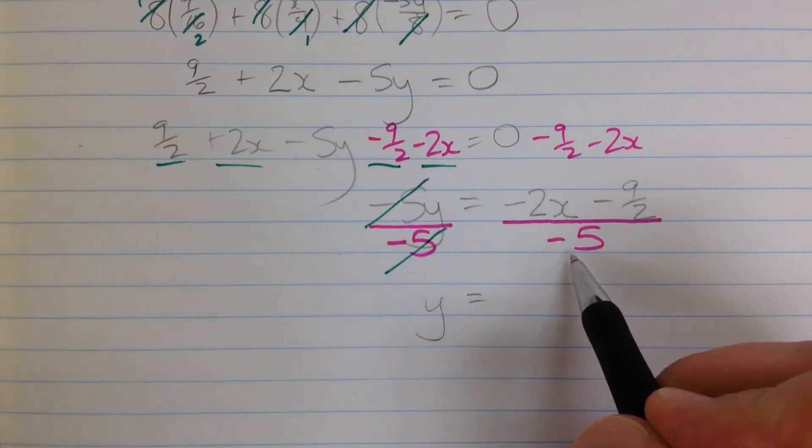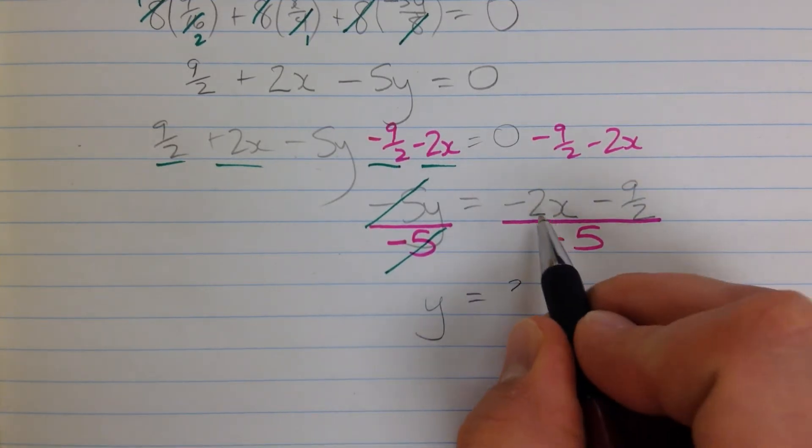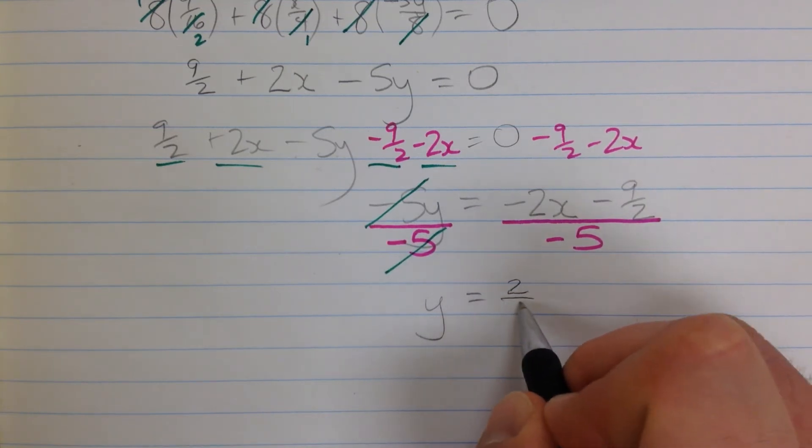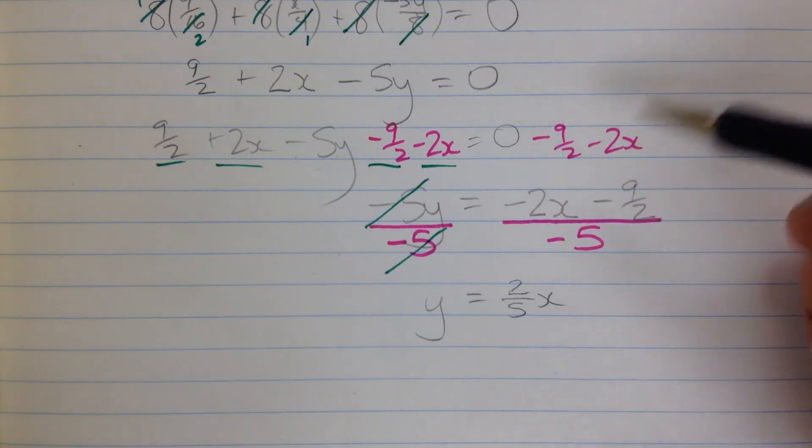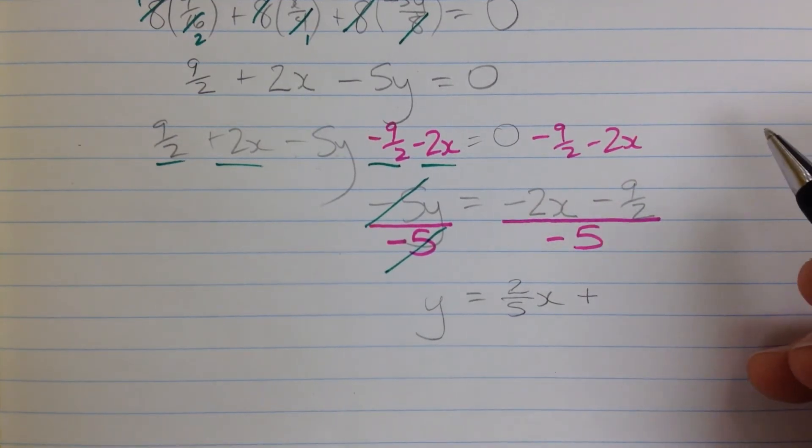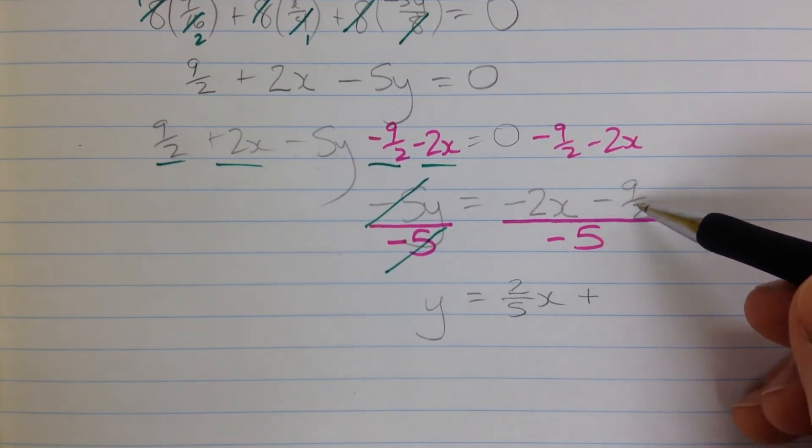So negative 2 over negative 5x, that's negative 2 over negative 5 times x is 2 over 5x, the negatives will cancel. The negatives are going to cancel here as well, I'm going to end up with a positive number. 9 over 2 divided by 5.